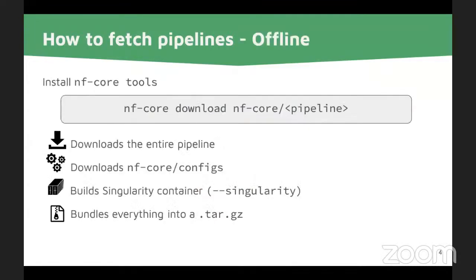In case your cluster doesn't have access to the internet, you can also pre-download your pipelines. There's nf-core tools which helps you do this — you just type `nf-core download` and then your pipeline name, and this will download the entire pipeline for you. It will also download all the containers. You can specify, for example, that you want a Singularity or a Docker container, and then it will bundle everything into a tar or zip file so you can easily transfer it over to wherever you want to run your pipelines.